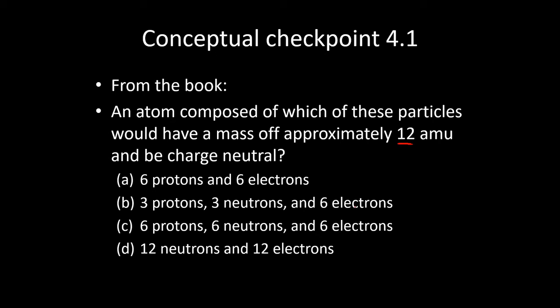The next one here has three protons and three neutrons and six electrons. This one is actually really not good. Because not only do we not have 12 AMU, because we only have six protons and neutrons when you add them together, but we're not neutrally charged either. Because we have three positive charges and six negative charges. So we would have a charge of negative three, which is not good.